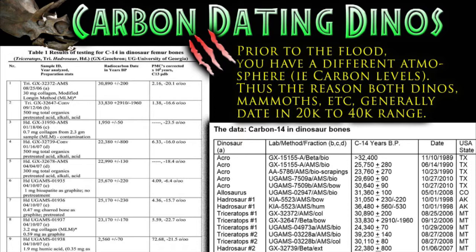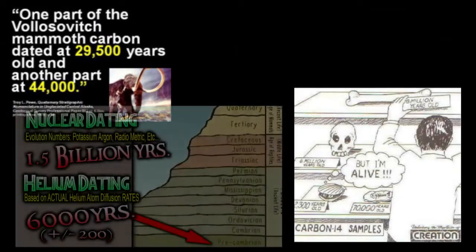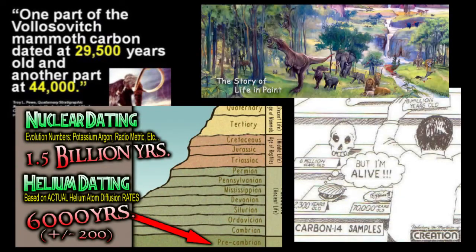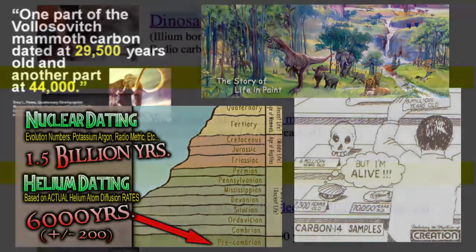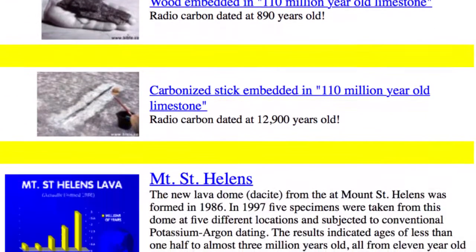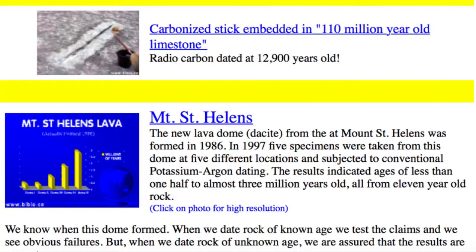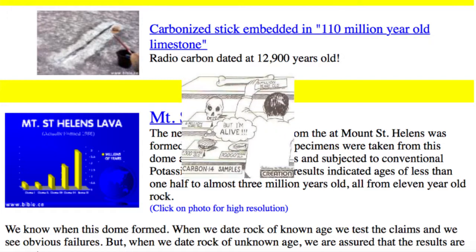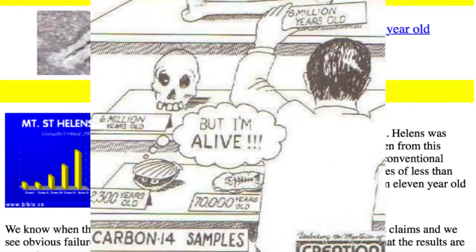Welcome back geology fans! A quick search on the internet through creationist land will give you all kinds of arguments against the validity of radiometric dating as we described in our last episode. You can find that dinosaur bone and wood fragments that are, according to us geologists, millions of years old have radiocarbon dates to mere thousands of years old, or there's the rock collected from Mount St. Helens which we know formed in 1980, but it dates up to 3 million years old. So, how can we trust radiometric dating?